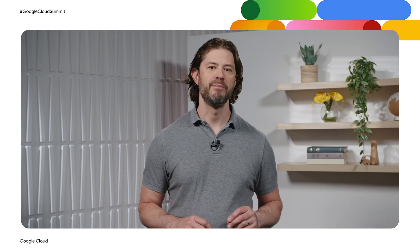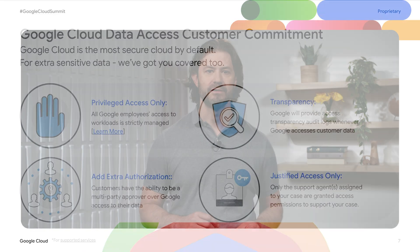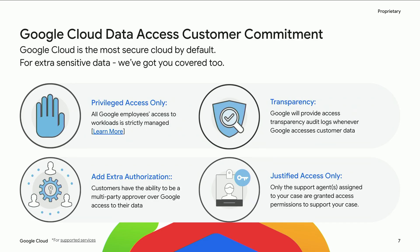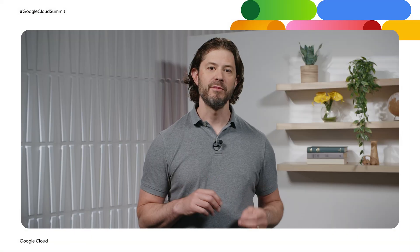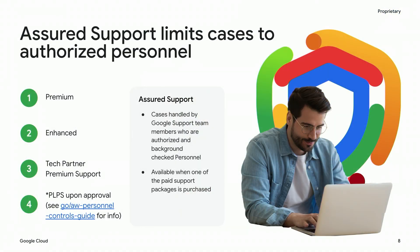Our access controls enable our commitments on data access. While we believe we are already the most secure cloud by default, for your most sensitive data we provide extra layers of protection. This means privileged access only, with all access strictly managed. It means justified access only, where only the support agent assigned to your case is granted permissions. It means full transparency through audit logs. And it also means you can add extra authorization, making yourself a multi-party approver for any Google access to your data. With Assured Support, you can ensure that your cases are handled only by Google support team members who are authorized background-checked personnel and meet specific regulatory or locational requirements.